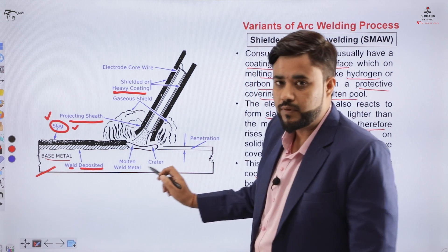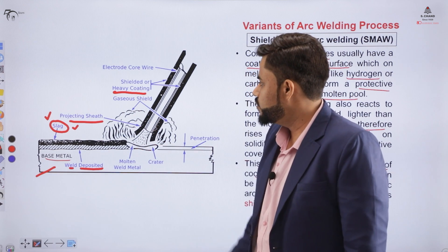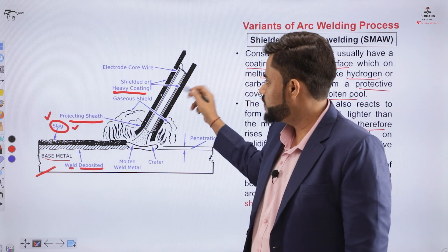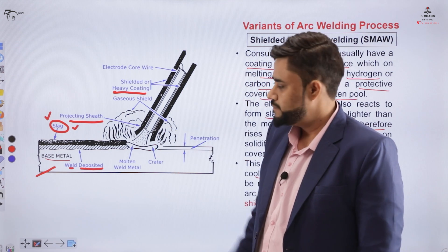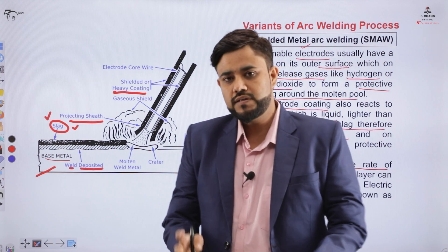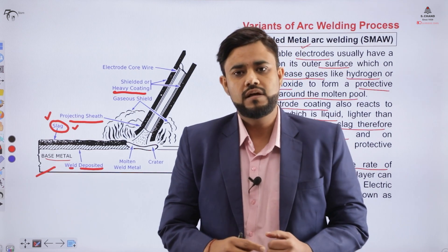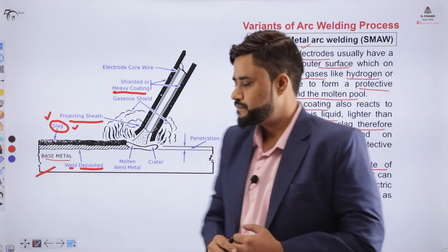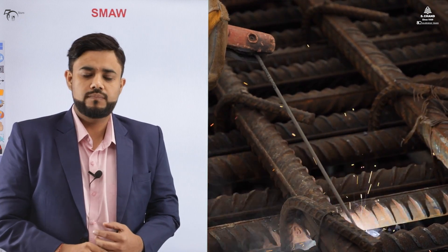This process is called a variant of electric arc welding because there is a kind of shielding or protective layer on the surface of the weld pool — that's why it is called shielded metal arc welding. The shielding is provided by the gases released from the melting of the electrode. Before moving to the next variant, let us see this process with the help of a video.